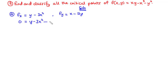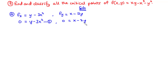Let's call fx = 0 equation 1. For fy = 0, we have 0 equals x minus 2y — let's call this equation 2. We try to make one of the variables the subject. We choose to make x the subject: transposing negative 2y to the left-hand side gives us 2y equals x.